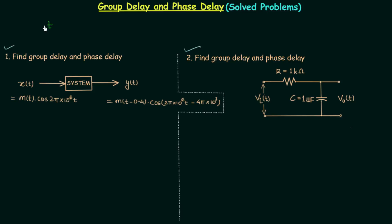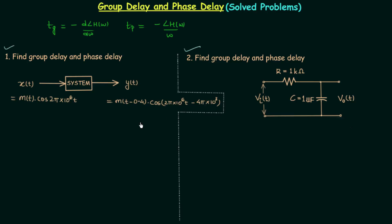Group delay is represented by t sub g and it is equal to the negative of the first derivative of the phase of the transfer function with respect to omega. The phase delay, represented by t sub p, is equal to the negative of the phase of the transfer function divided by angular frequency omega. In the first problem there is no need for the formula because the delays are already given in the output and you only need to identify the group delay and the phase delay.